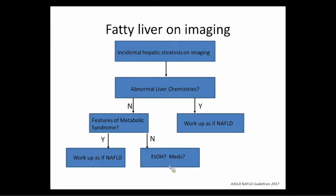Fatty liver on imaging — I'll admit when I was a resident I'd see it all the time and wouldn't do anything about it. By our new guidelines, if you see incidental hepatic steatosis on imaging, the next step is: do they have abnormal LFTs? If so, work them up for NAFLD. If not, look for features of metabolic syndrome — if they have features, they should also be worked up for NAFLD, because the more features of metabolic syndrome, the more likely they are to have NASH. Importantly, you can have NASH with totally normal ALT — that happens in about 25% of patients. If it's neither, check for alcohol use or steatogenic medications.